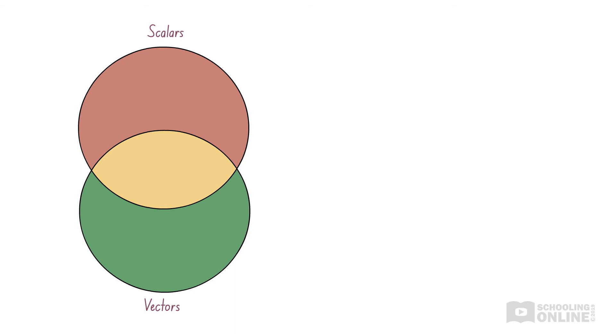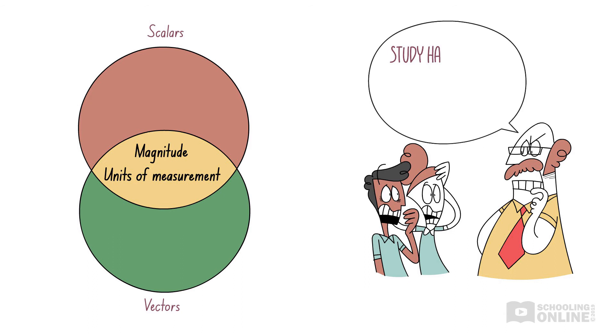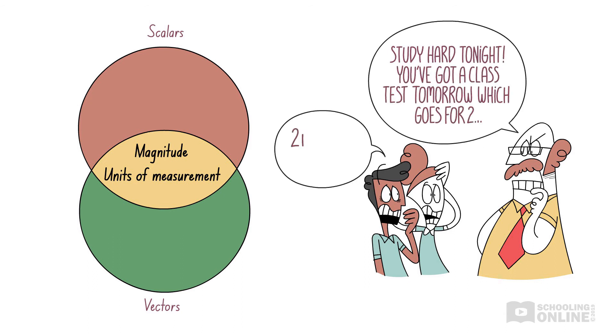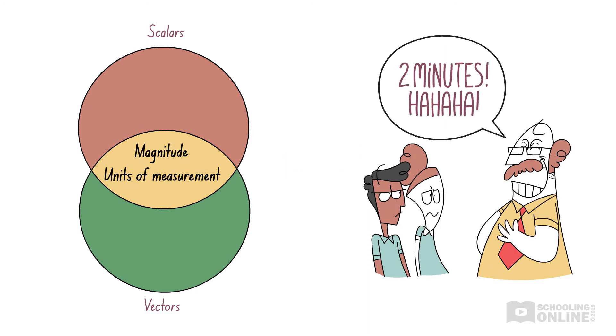Now that we have a clear understanding of scalars and vectors, let's compare their features. Firstly, when writing scalars and vectors, we should include their magnitude and their units. The reason for this is simple. Measurements are meaningless if they are written without units. Suppose that you have a class test coming up. Your teacher tells you that it has a duration of 2. Hold on, does it go for 2 minutes or 2 hours? There's no way you can be certain unless your teacher told you which units they used. In a similar way, we should always show units when writing results.